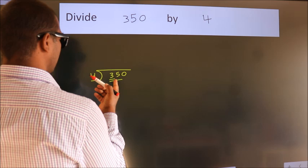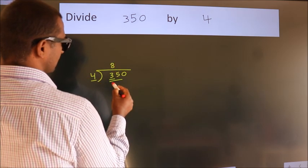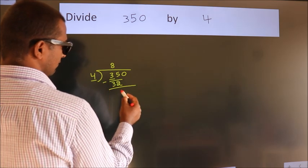A number close to 35 in 4 table is 4, 8, 32. Now we should subtract. We get 3.